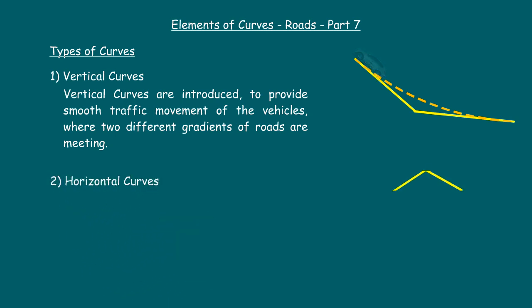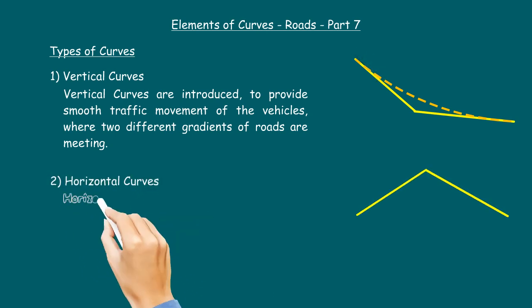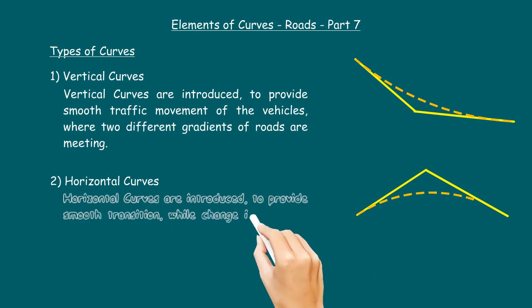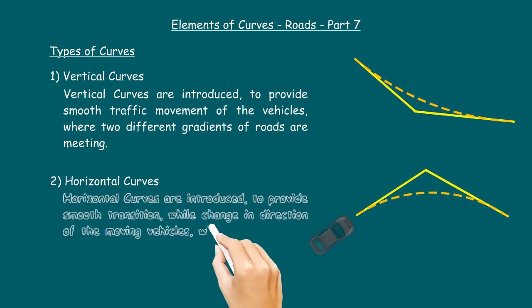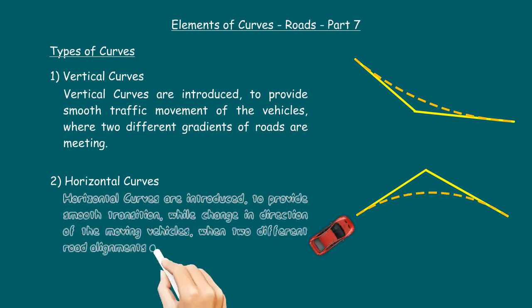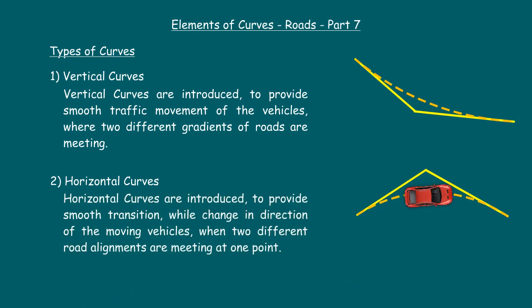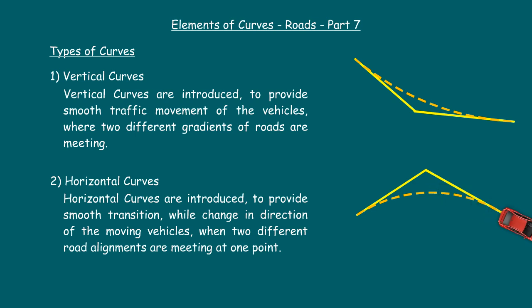The second major type is horizontal curves. Horizontal curves are introduced to provide a smooth transition while a change in direction of moving vehicles, when two different road alignments are meeting at one point.